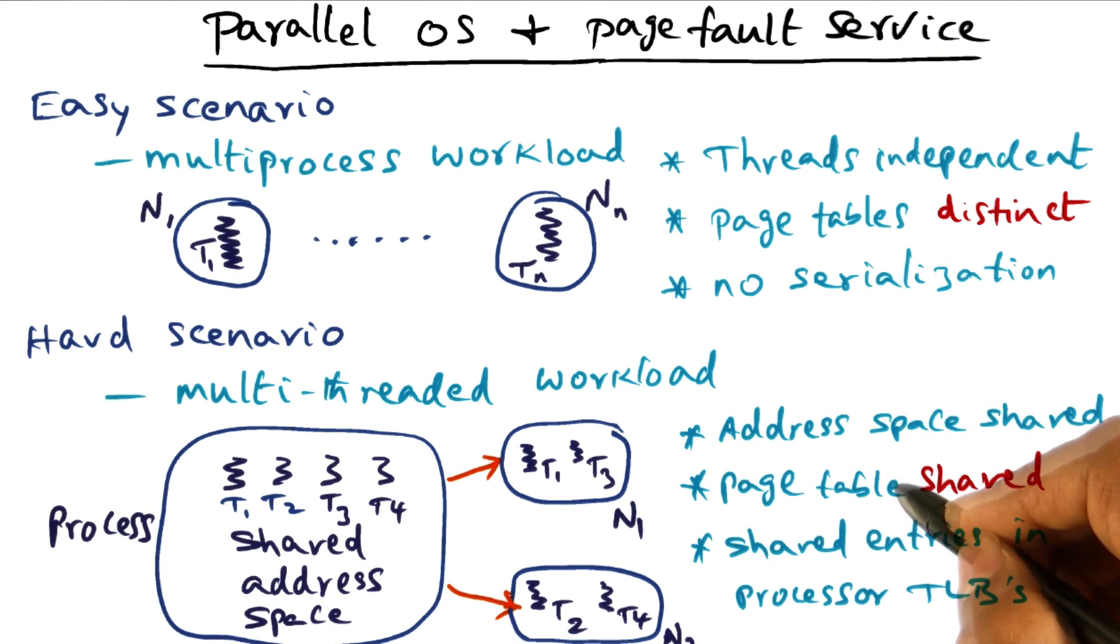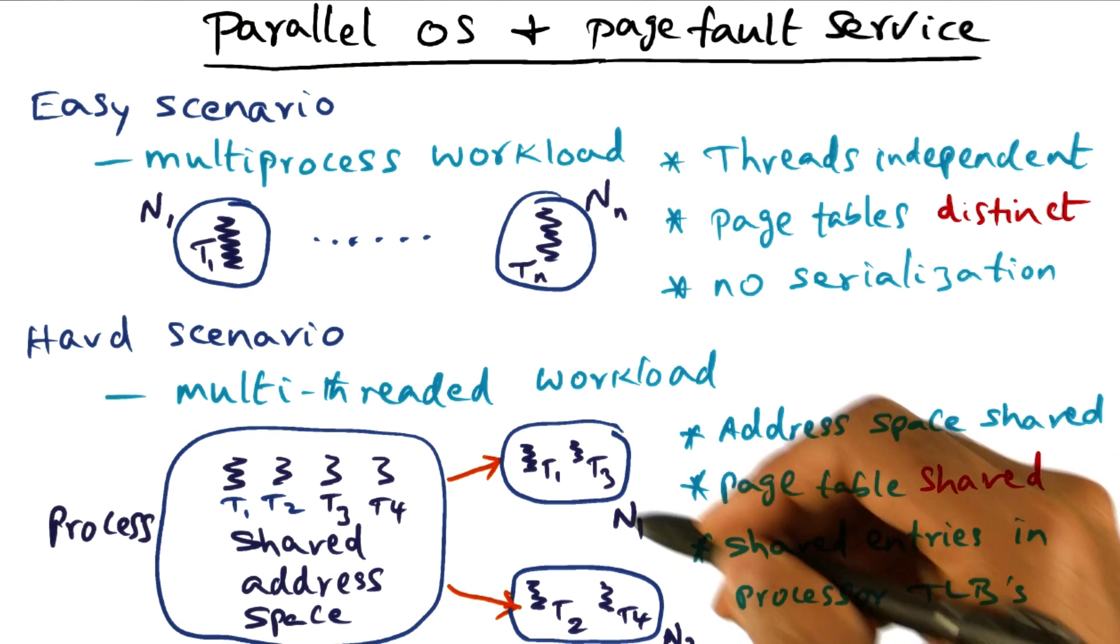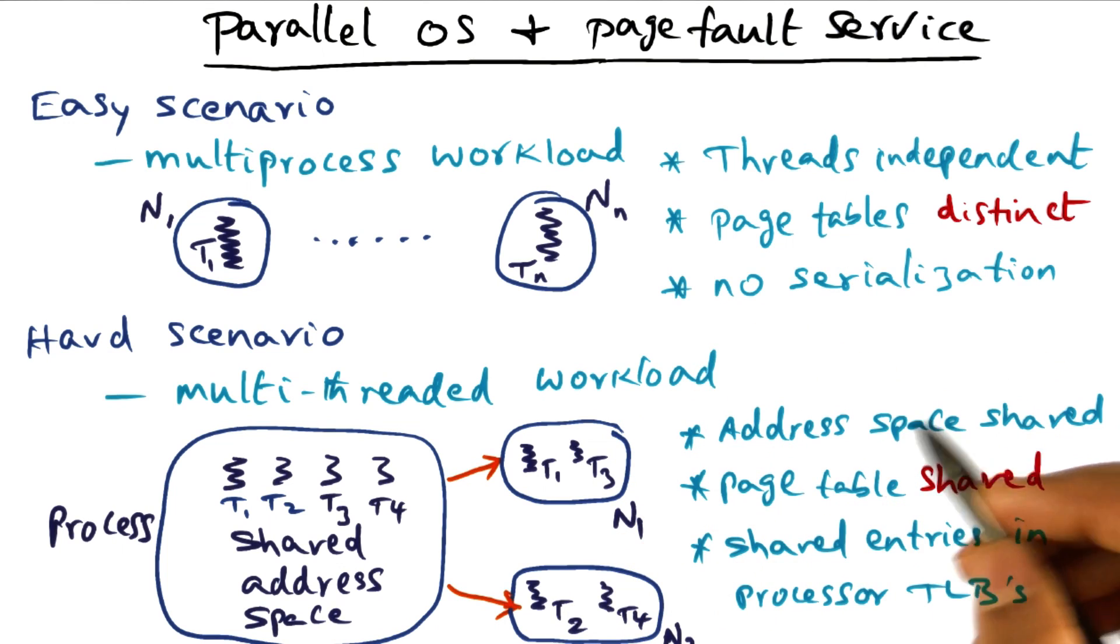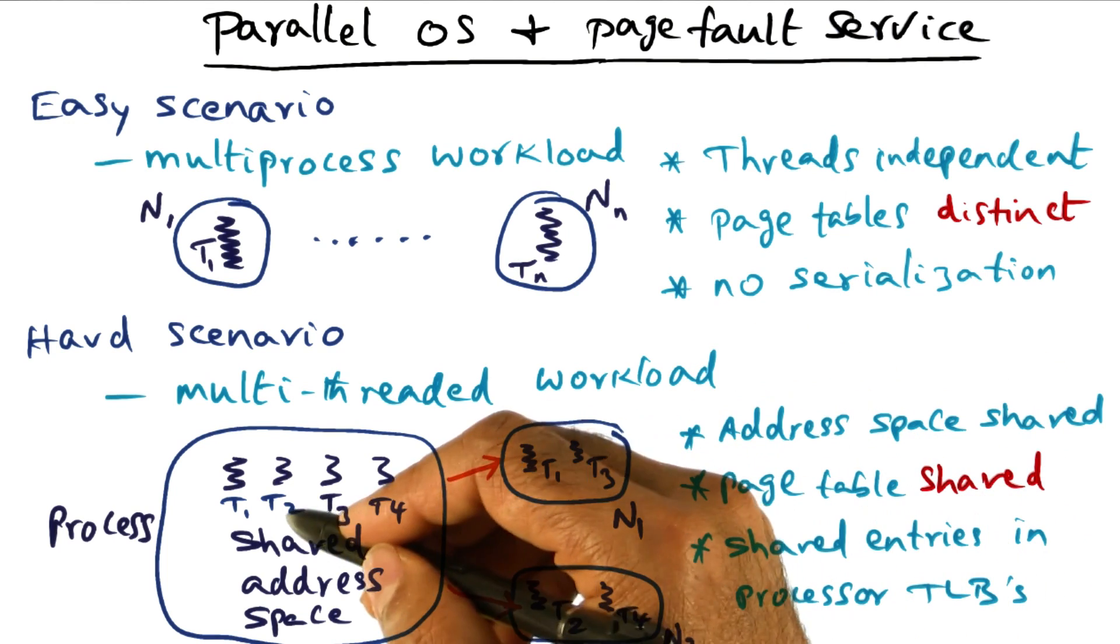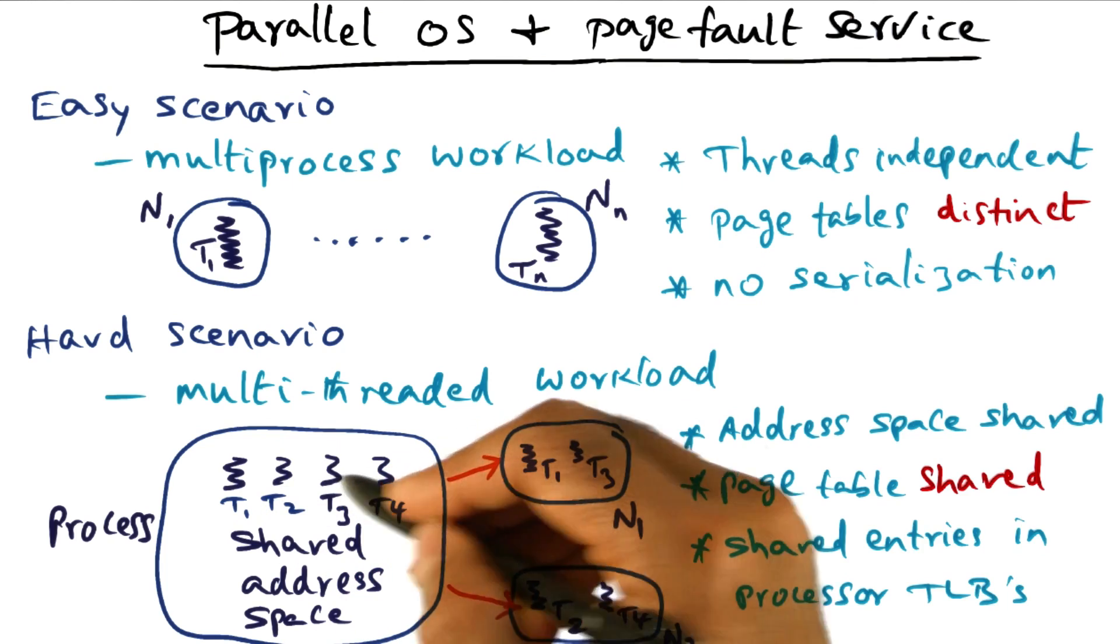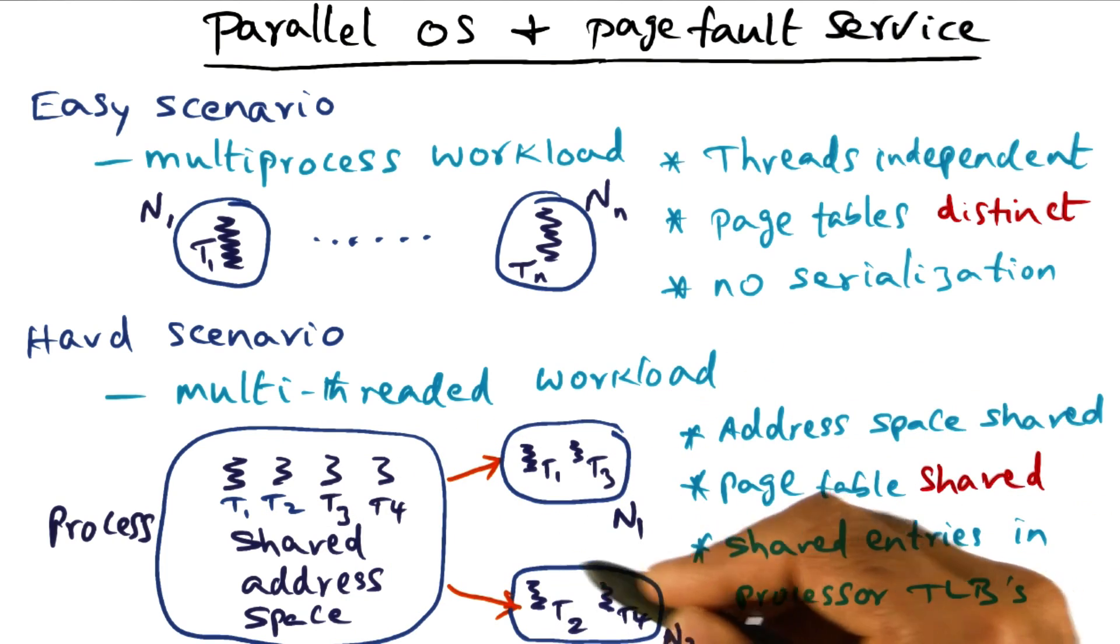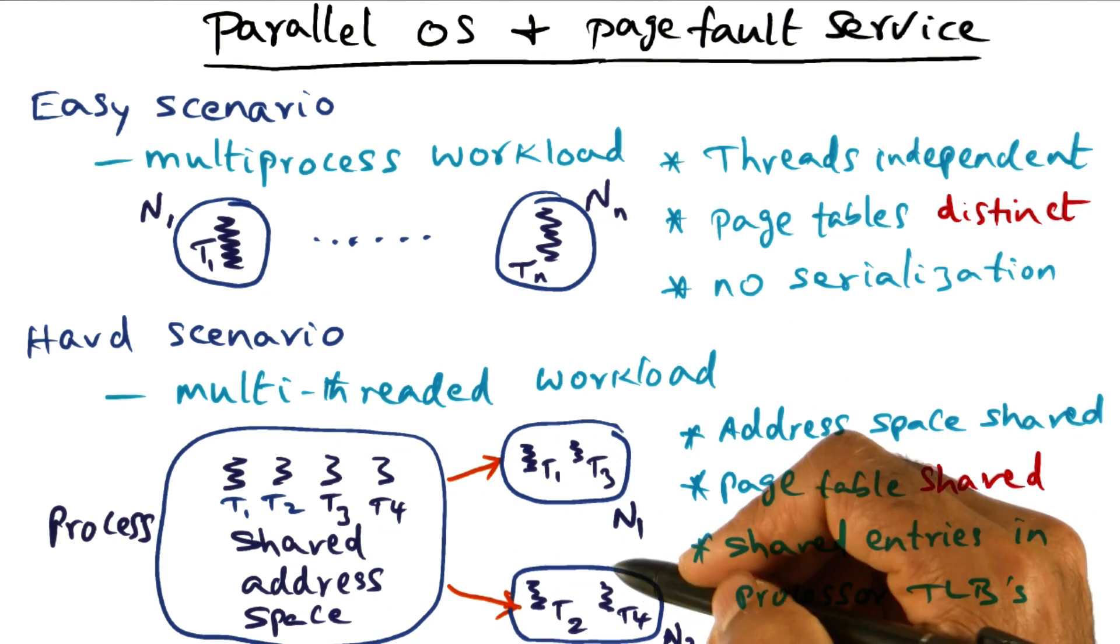Now, if you think about it, what we would want is to limit the amount of sharing in the operating system data structures when they are executing on different processors. In particular, for this particular mapping I've shown you, T1 and T3 are executing on N1, and T2 and T4 executing on N2.